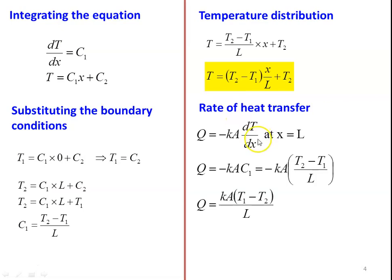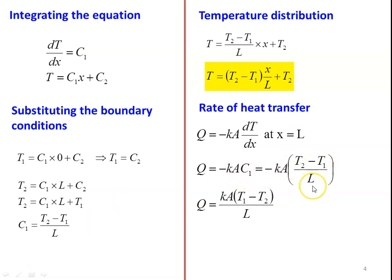Now the rate of heat transfer. From Fourier's law of heat conduction: Q = −K·A·(dT/dx) at x = L. We already have dT/dx = C1. So Q = −K·A·C1. Substituting for C1 = (T2 − T1)/L, and accounting for the direction, Q = K·A·(T1 − T2)/L. Writing this in a rearranged form: Q = (T1 − T2) / (L/KA), where the numerator is the temperature difference and the denominator L/KA is the thermal resistance. This is the heat transfer equation for the one-dimensional slab.